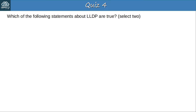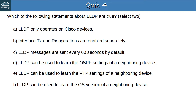Question 4: Which of the following statements about LLDP are true? Select two. The correct answers are B and F. When configuring LLDP, unlike CDP, you must enable transmit (TX) and receive (RX) separately on each interface — so B is correct. And LLDP can be used to learn the OS version of a neighboring device — so F is also correct. LLDP is an industry standard protocol, so A is incorrect. Its default message timer is 30 seconds, so C is incorrect. It can't be used to learn the OSPF settings or the VTP settings of a neighbor — although CDP can be used to learn VTP settings — so those options are incorrect.